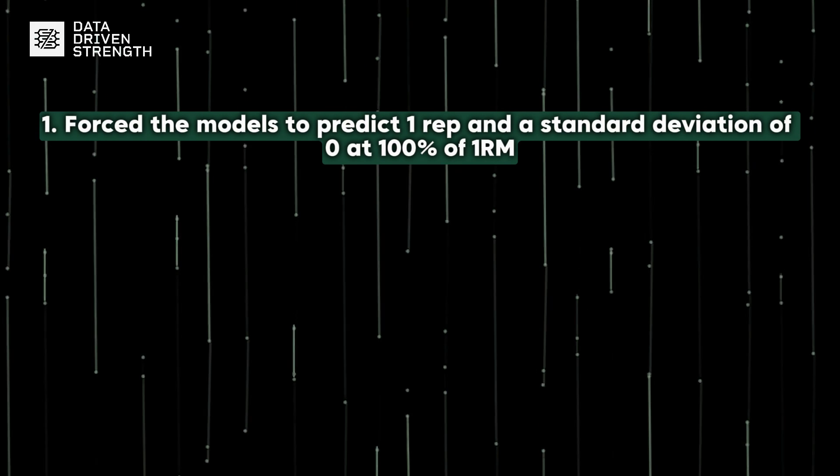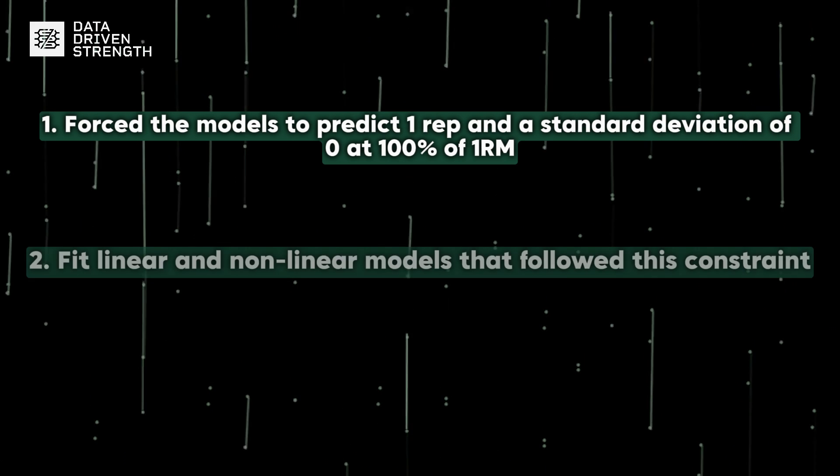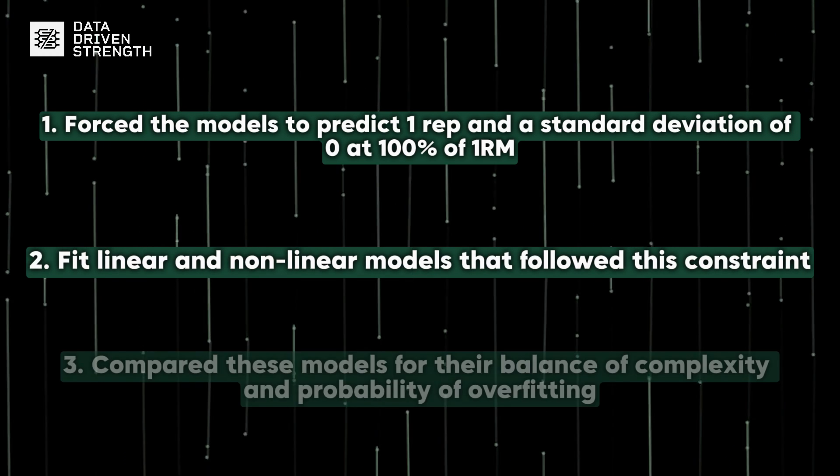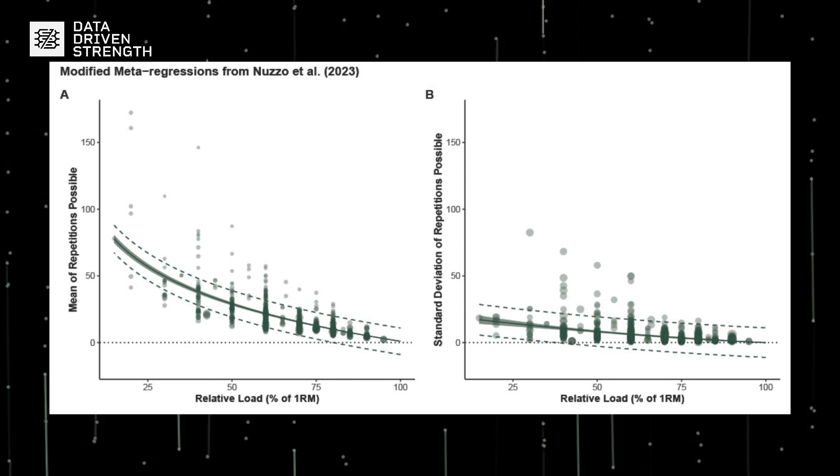I refitted and compared a few candidate models after making some adjustments — and this was only possible because the authors made their data and code openly available, which is an honorable practice. To summarize what I did: I forced the models to predict one rep with a standard deviation of zero at 100% of 1RM, then fit linear and nonlinear models following this constraint, and compared these models for the balance of complexity versus probability of overfitting. The models that survived were a linear log model for mean repetitions and a second-order polynomial for the standard deviation.